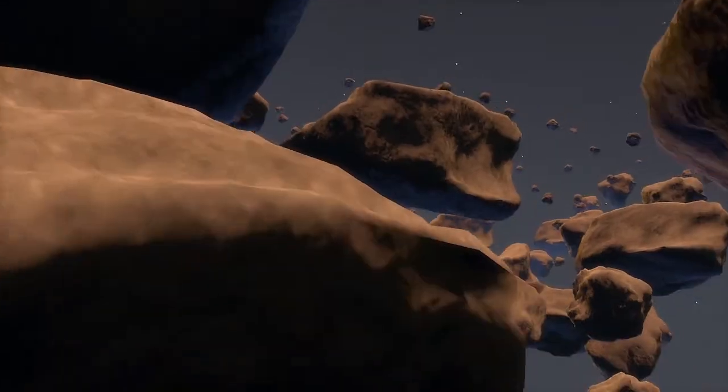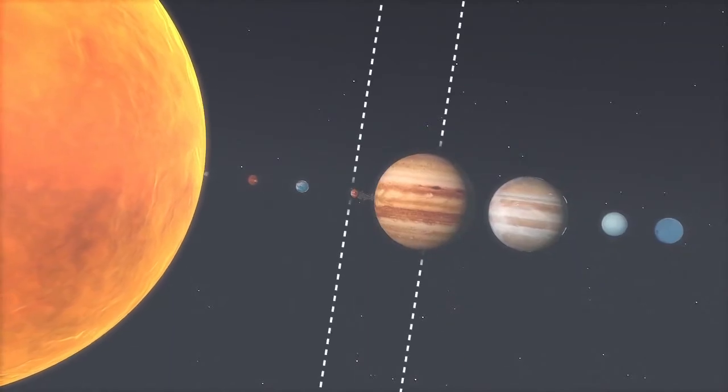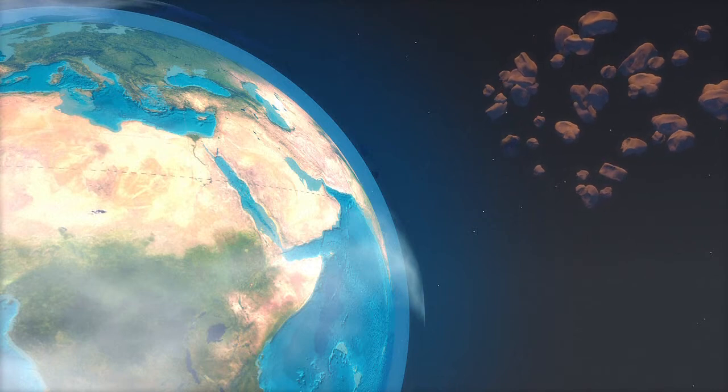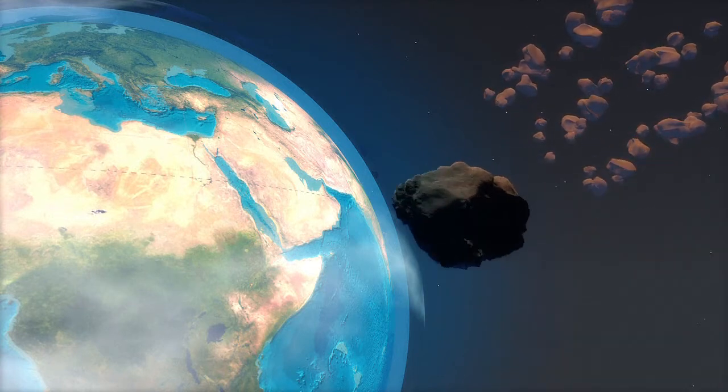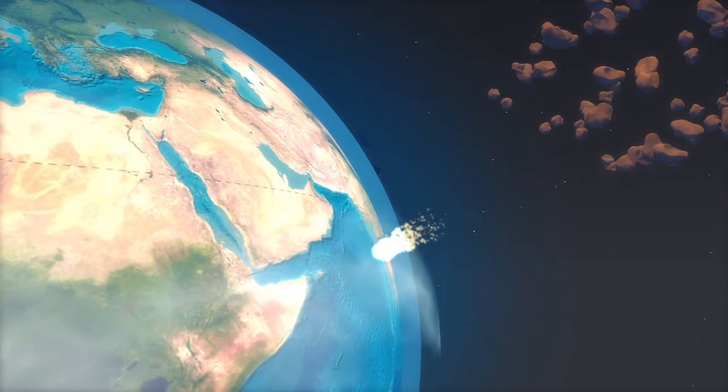Meteorites are mostly fragments of asteroids that gravitate between Mars and Jupiter. Some are particularly rare, from the Moon or even Mars. Fragments of asteroids called meteoroids head towards Earth. They're only called meteorites when they crash into the ground.